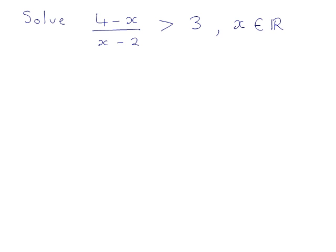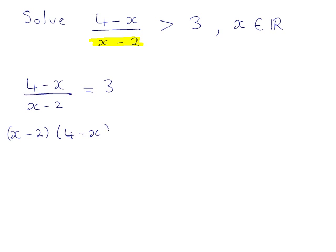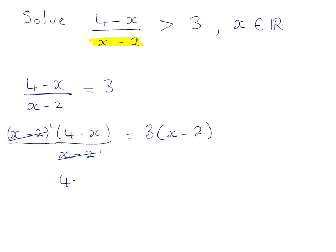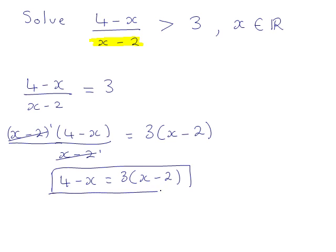How can we solve this inequality? The first thing you might notice is that there is a denominator, x minus 2. So we would like to simplify this problem. If you had been asked to solve the equation (4 − x) / (x − 2) = 3, then you would multiply both sides by (x − 2). Then (x − 2) / (x − 2) goes once, so this becomes 4 − x = 3(x − 2), and now there is no denominator. You would proceed as normal and solve.